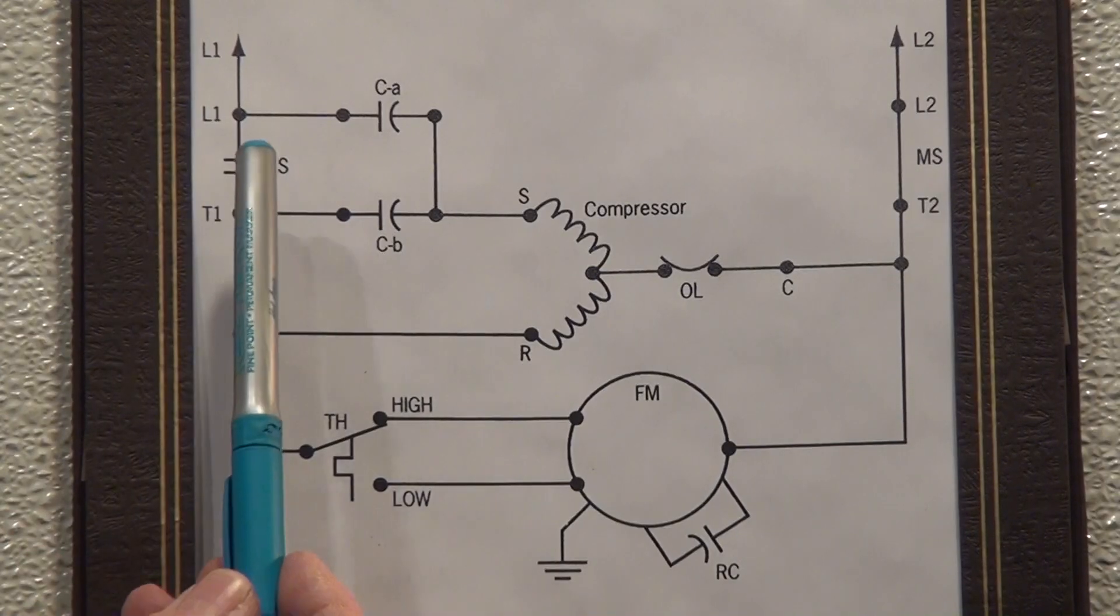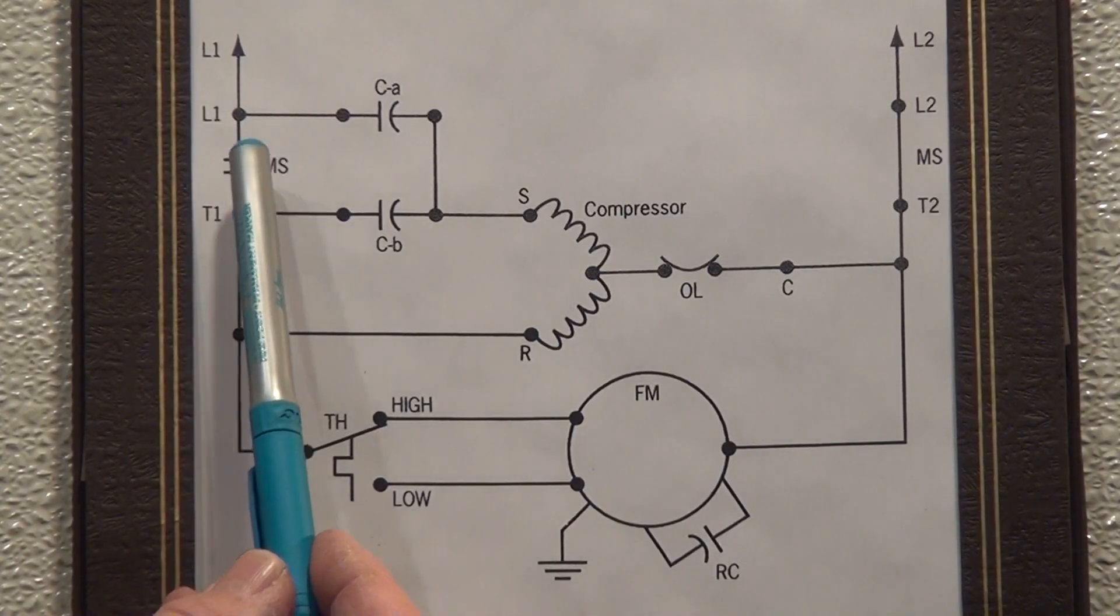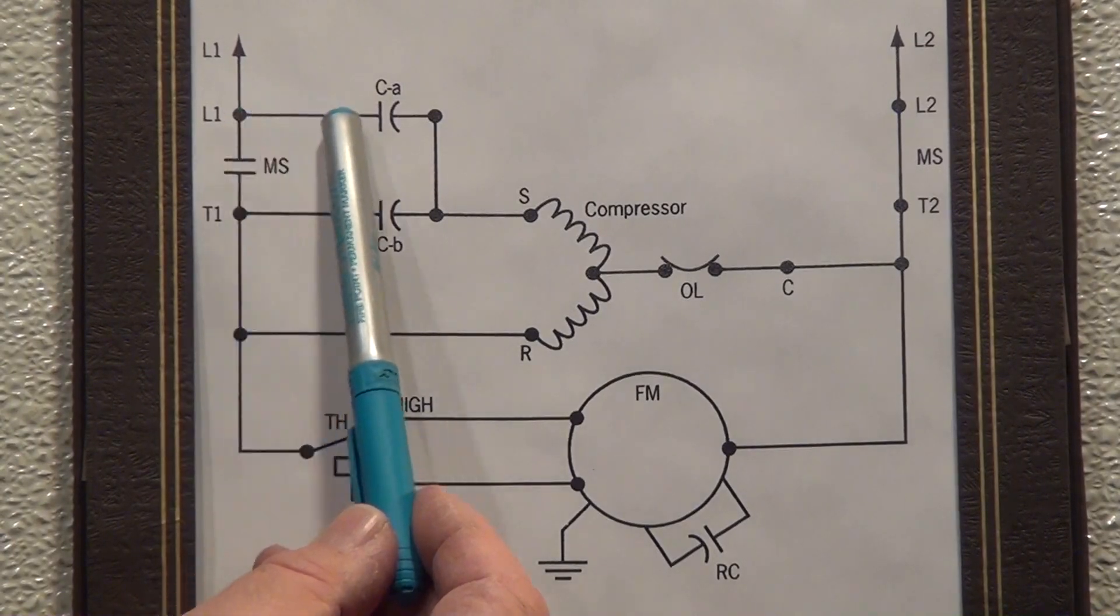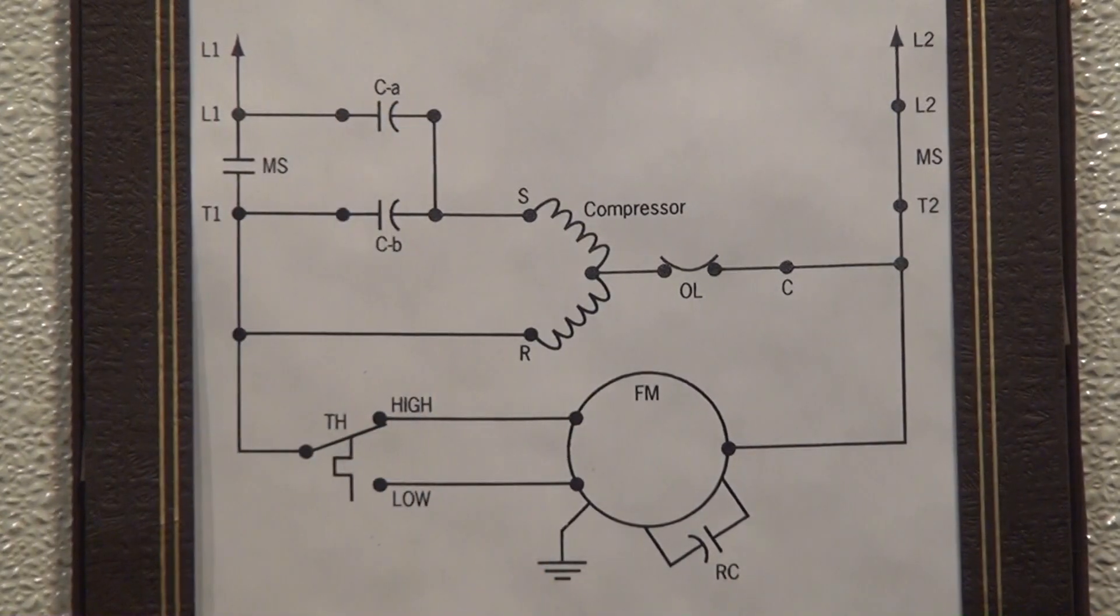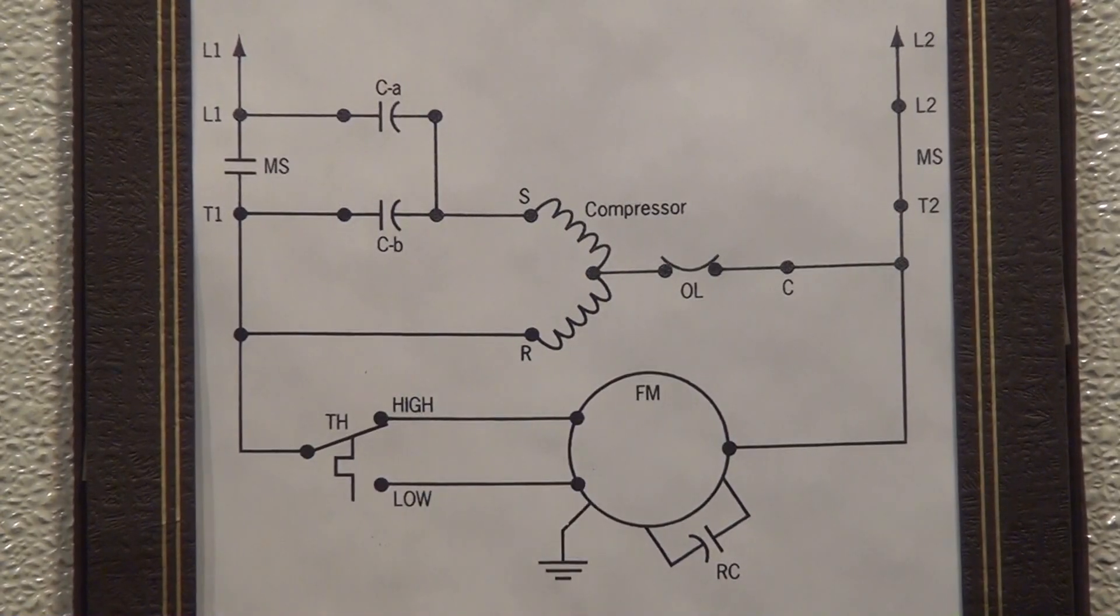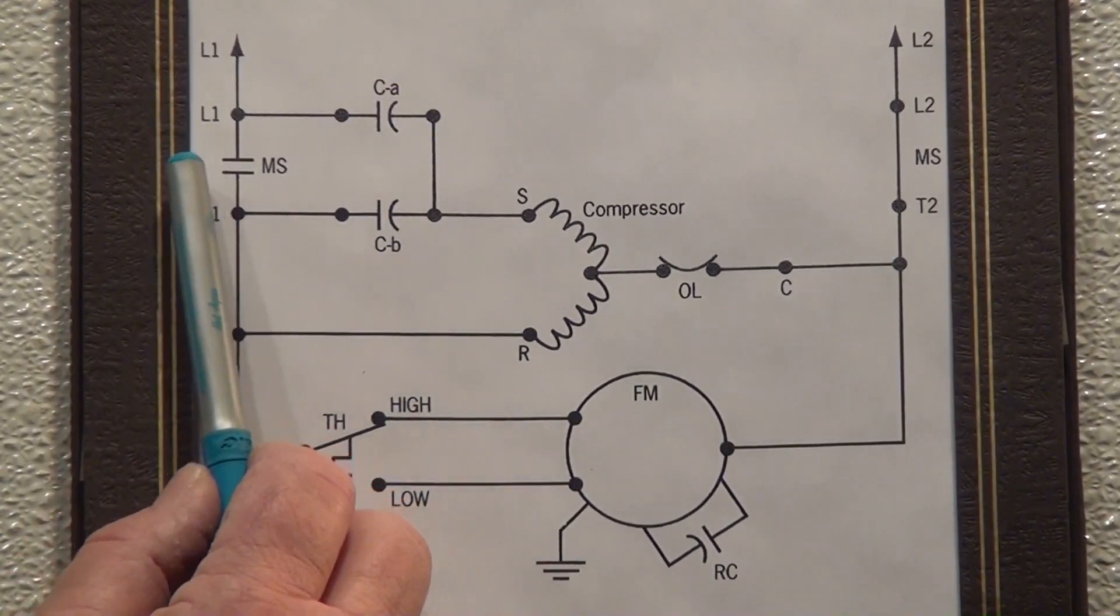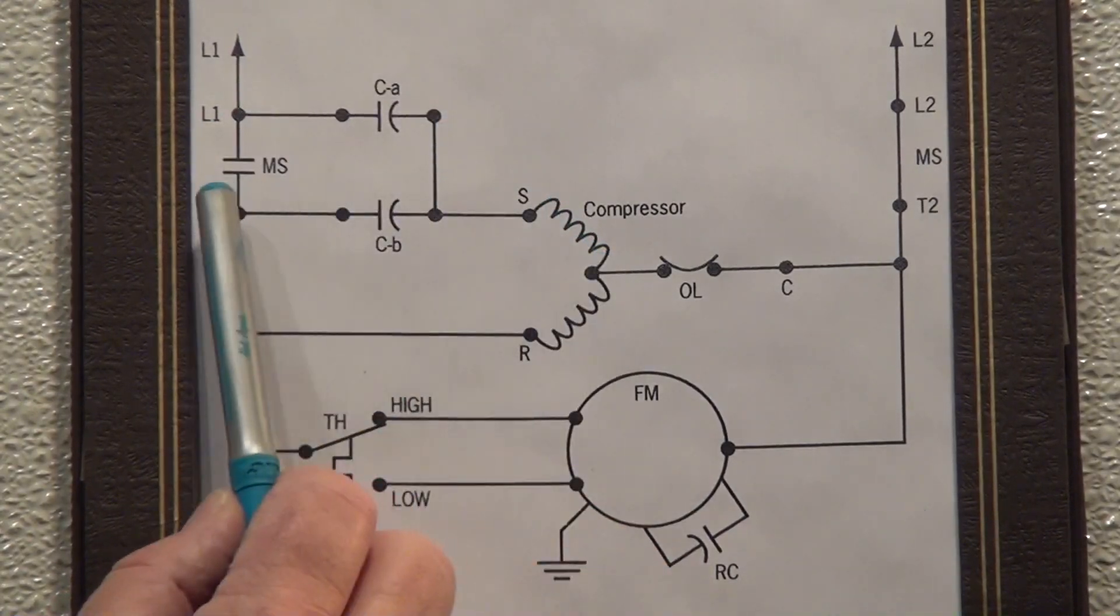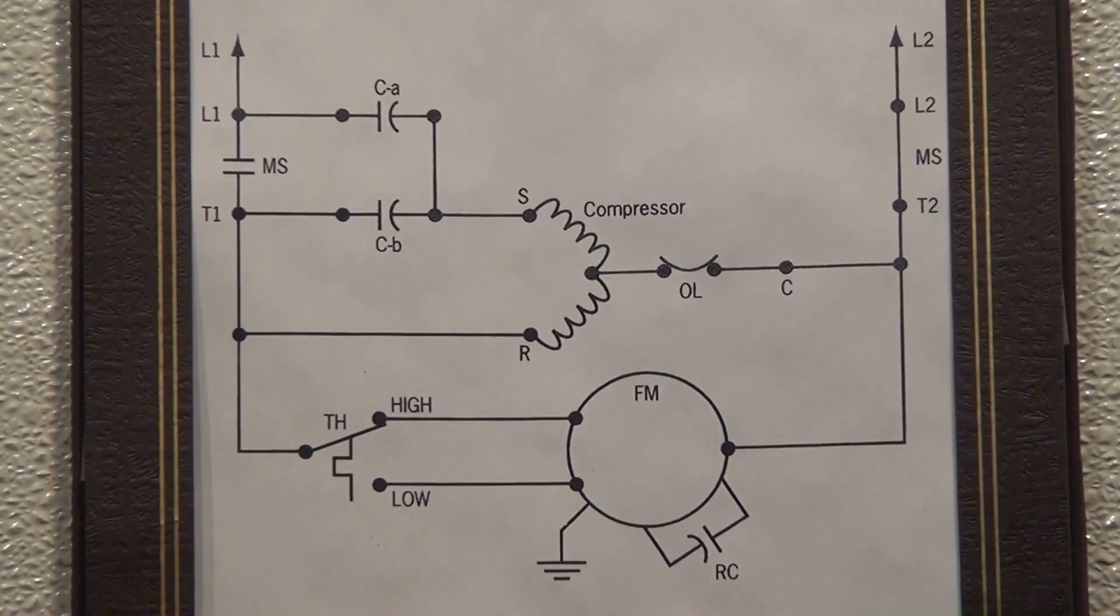The other point I want you to understand is that this particular piece of equipment employs two capacitors in its original format. One is labeled CA, in other words capacitor A, the other one is labeled CB which is capacitor number two. And you're going to notice that both of these capacitors are wired in series with the start winding. That's a point that we want to make there.